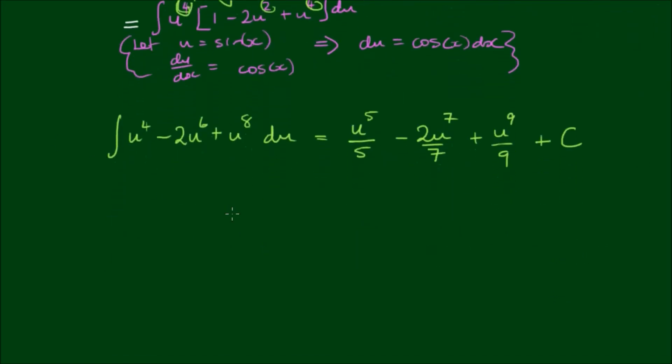And finally we can now back substitute u equals sin x into the result. So we have the integral then of sin to the 4th power of x by cos to the 5th power of x with respect to x equals sin to the 5th power of x on 5, minus 2 on 7 by sin to the 7th power of x, plus sin to the 9th power of x on 9, plus the integration constant c.